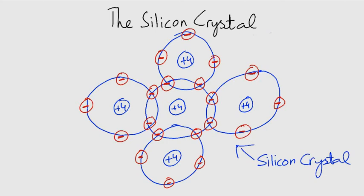A silicon atom with its four valence electrons shares an electron with each of its four neighbors. This effectively creates eight-shared valence electrons for each atom and produces a state of chemical stability.